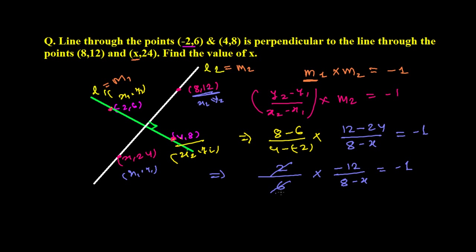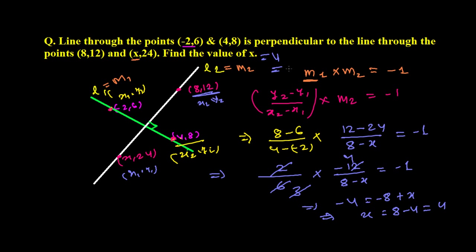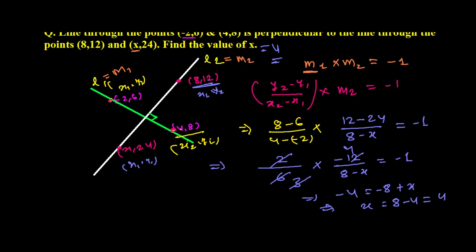Solving: (2 × -12) / (6 × (8 - x)) = -1, which gives -24 / (6(8 - x)) = -1, so -4 = -(8 - x), meaning 8 - x = 4, and therefore x = 8 - 4 = 4. So x equals 4. This was completely based on the slope. To find the slope of a line, there are many methods we will learn one by one.